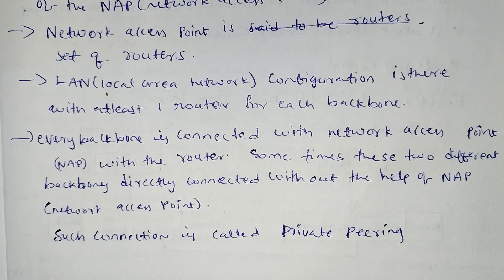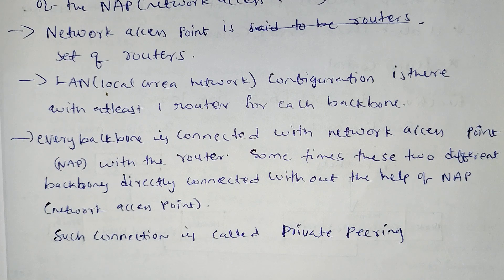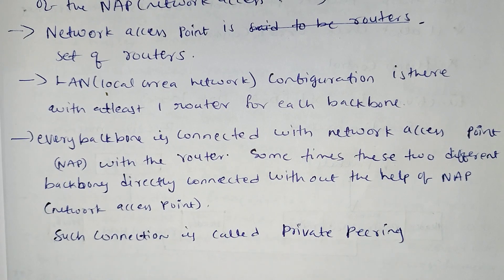Two different backbones can also be connected directly without the help of a NAP. Such a connection is called Private Peering. This is the internet architecture.